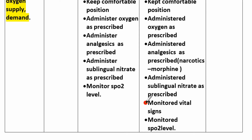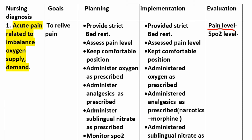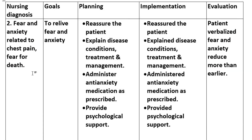Implementation continued: administer analgesics as prescribed — for example narcotic drugs such as morphine — administer sublingual nitrate as prescribed, monitor vital signs, and monitor saturation level. Evaluation: pain level and saturation level — pain is reduced more than earlier.